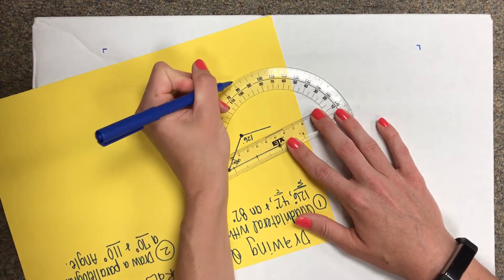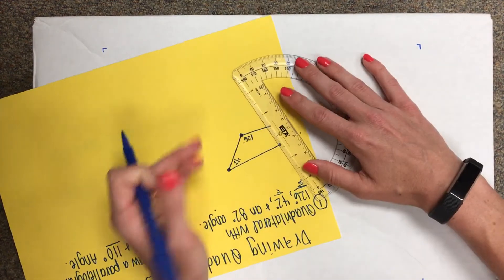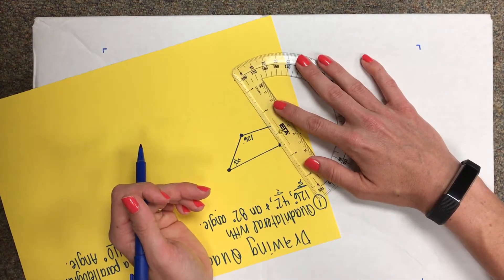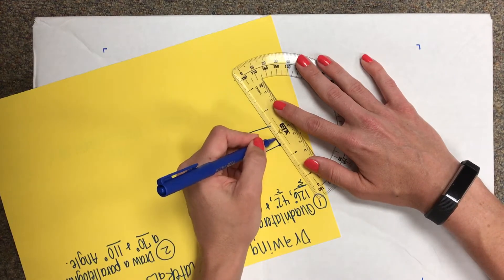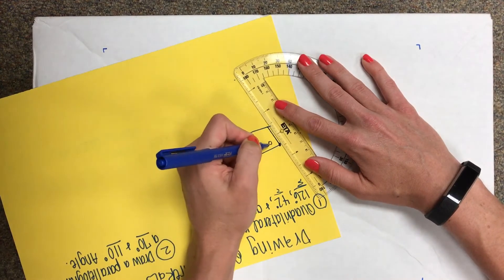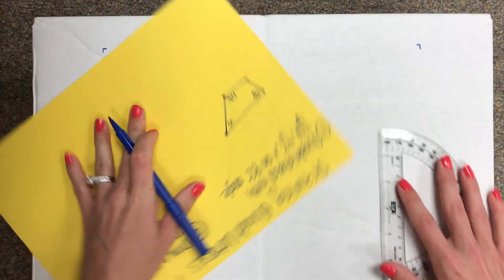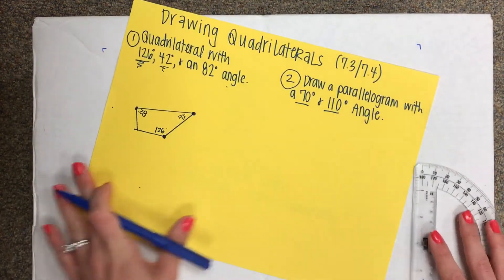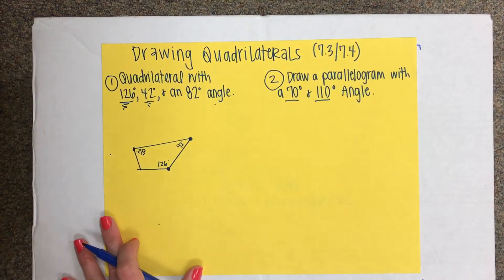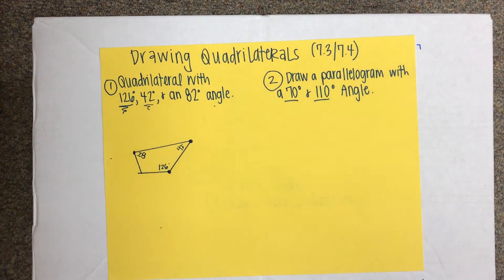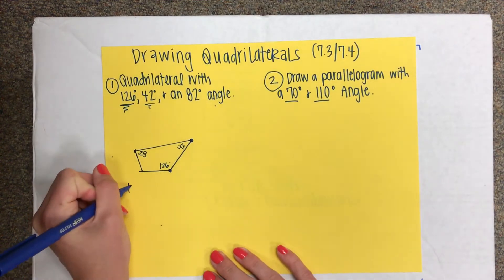So, 82 is going to be right here. So when I connect my dot, I will have a quadrilateral. It is four-sided. It doesn't necessarily need to be perfect, just because we have four different degree measurements.